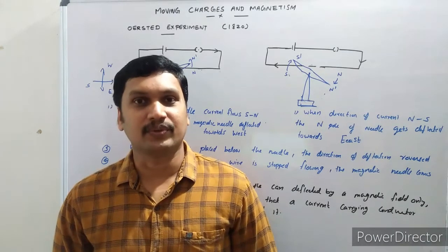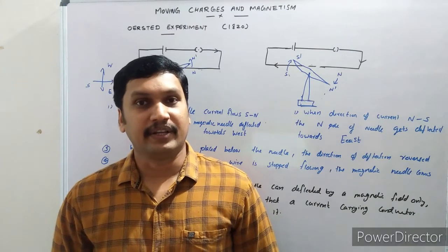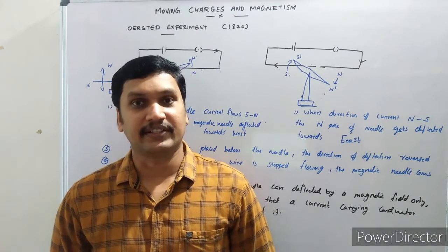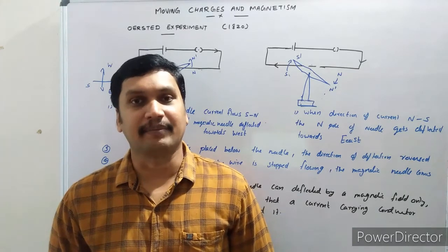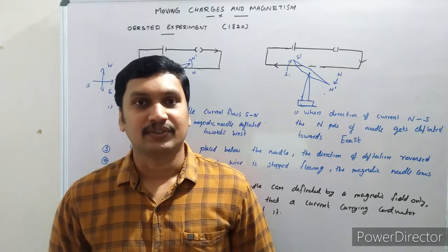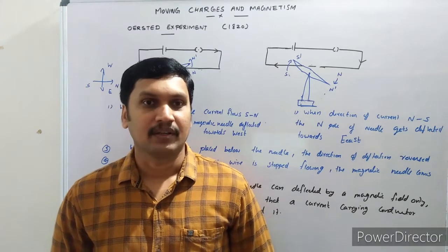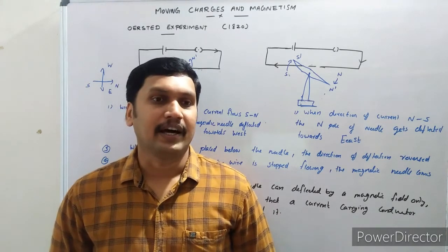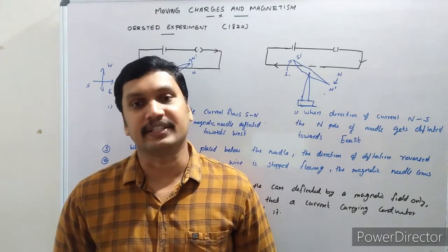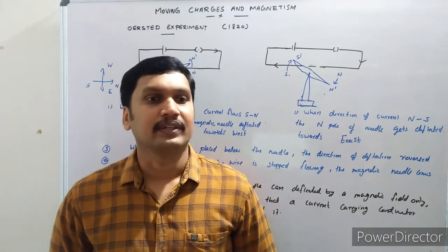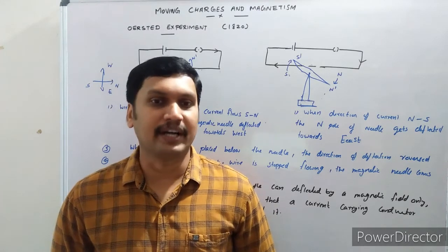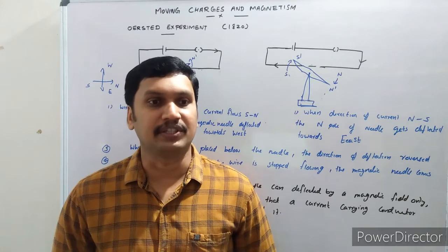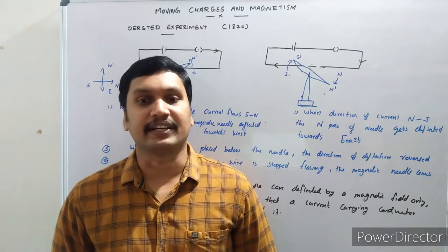Hello students, welcome to physics class. Today we are starting a new chapter in physics — Moving Charges and Magnetism, chapter number four from the NCERT textbook. You know that both electricity and magnetism have been known for more than 2000 years. However, it was only about 200 years ago, exactly in 1820, that it was realized that they were intimately related.